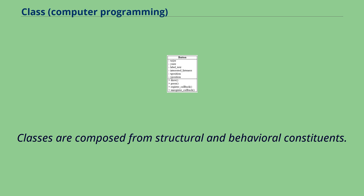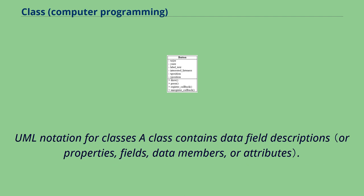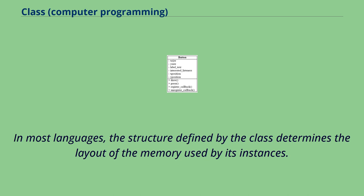Classes are composed from structural and behavioral constituents. Programming languages that include classes as a programming construct offer support for various class-related features, and the syntax required to use these features varies greatly from one programming language to another. In UML notation, a class contains data field descriptions — usually field types and names that will be associated with state variables at program runtime. These state variables either belong to the class or specific instances of the class.